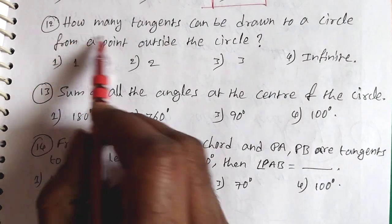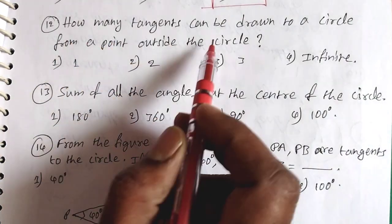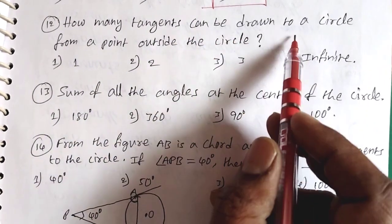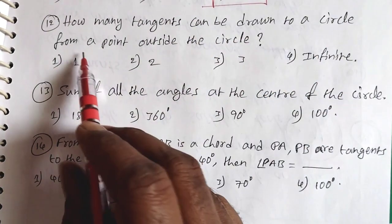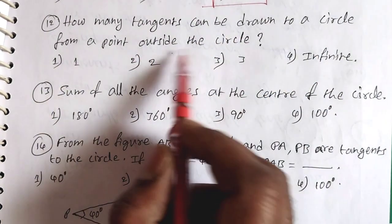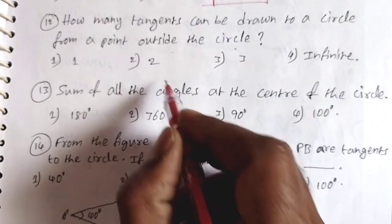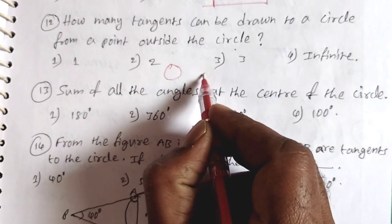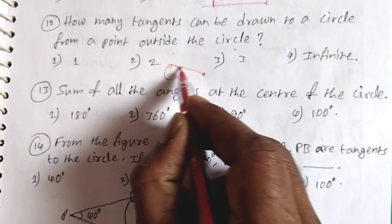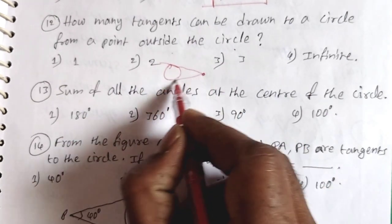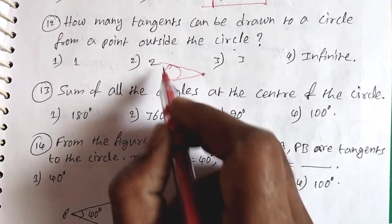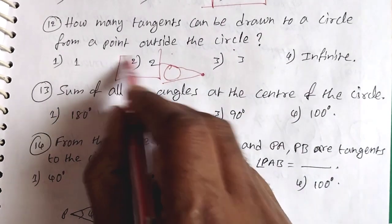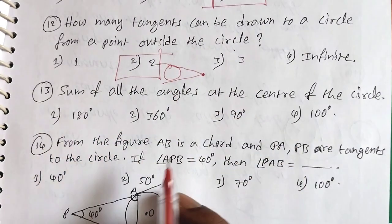Question 12: How many tangents can be drawn to a circle from a point outside the circle? The point is outside the circle. Any two tangents can be drawn from an external point. So the second option, two, is the answer.